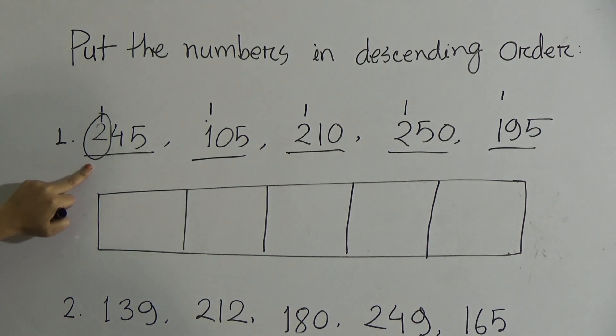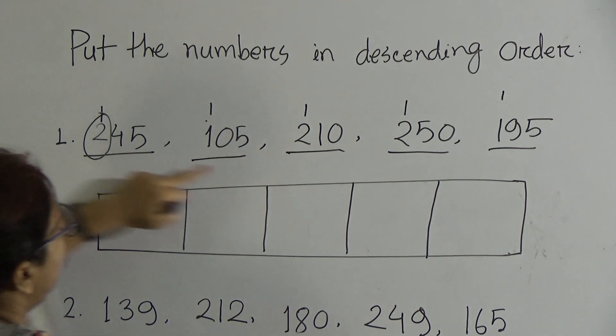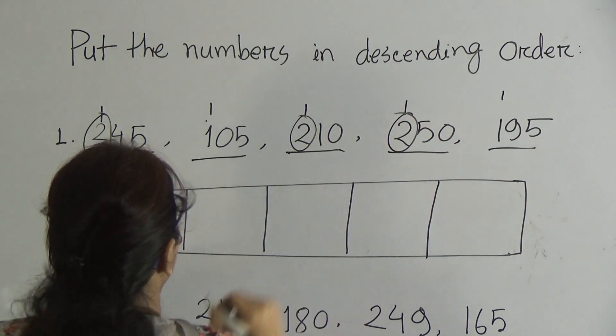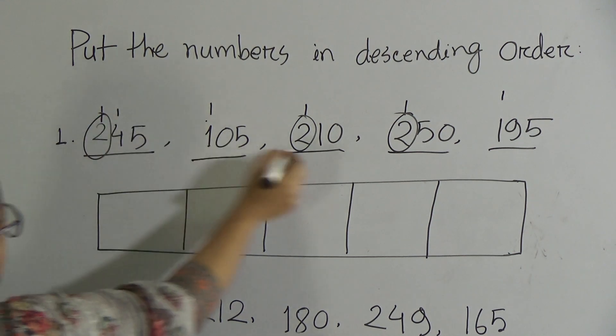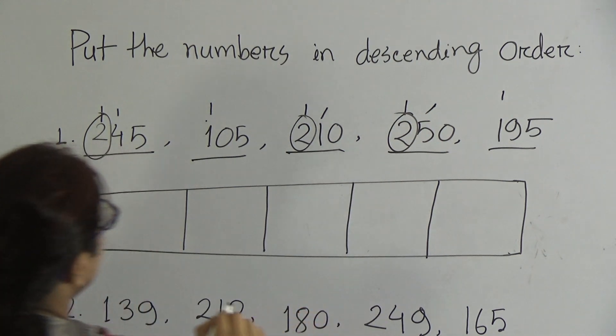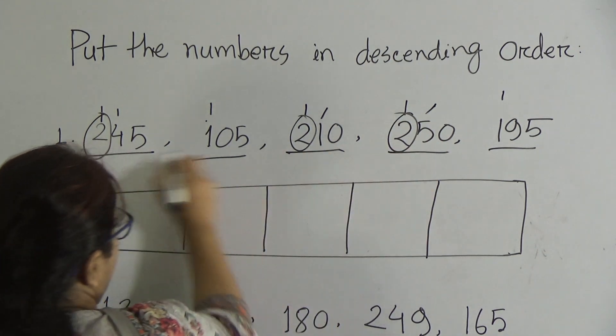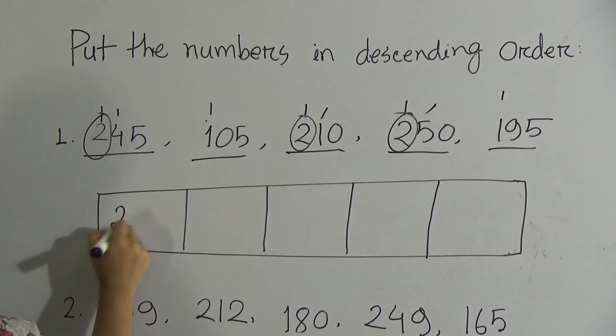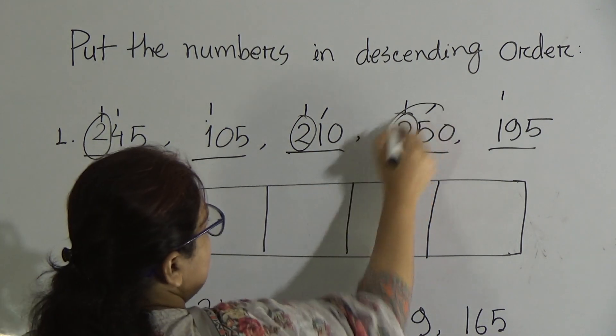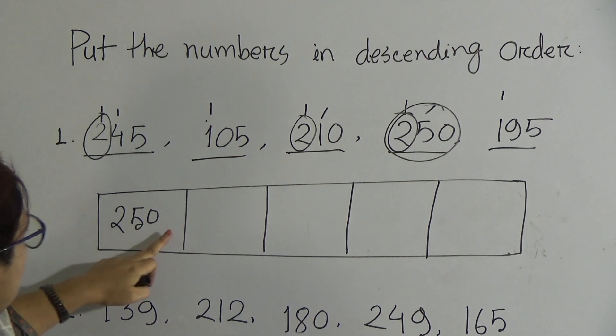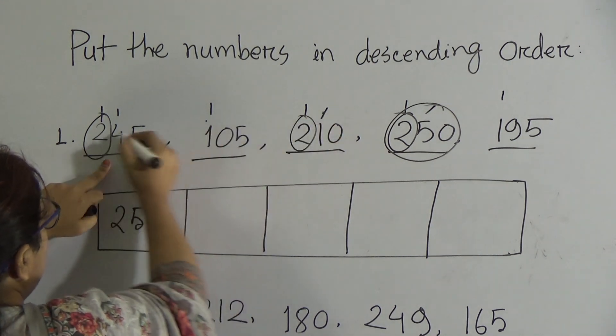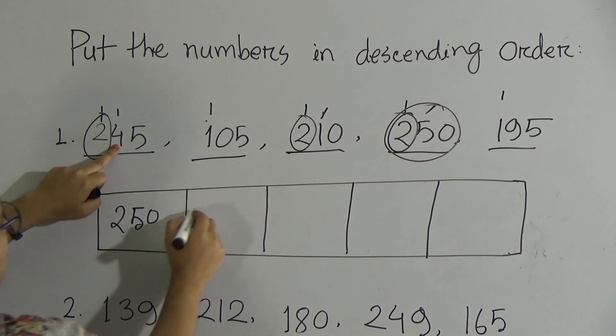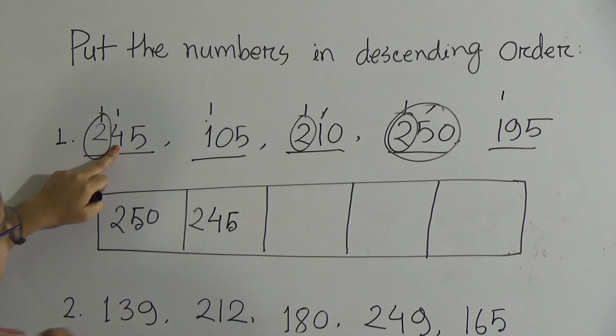You need to arrange which number will come first. The biggest number from this number is two. There are two here, two here, and two here. Now go to the next numbers, second numbers, that is tens place: four, one, and five. So five is the biggest number from these three numbers, so you need to write 250 at first. Now circle this number 250. Now move on to the next number.